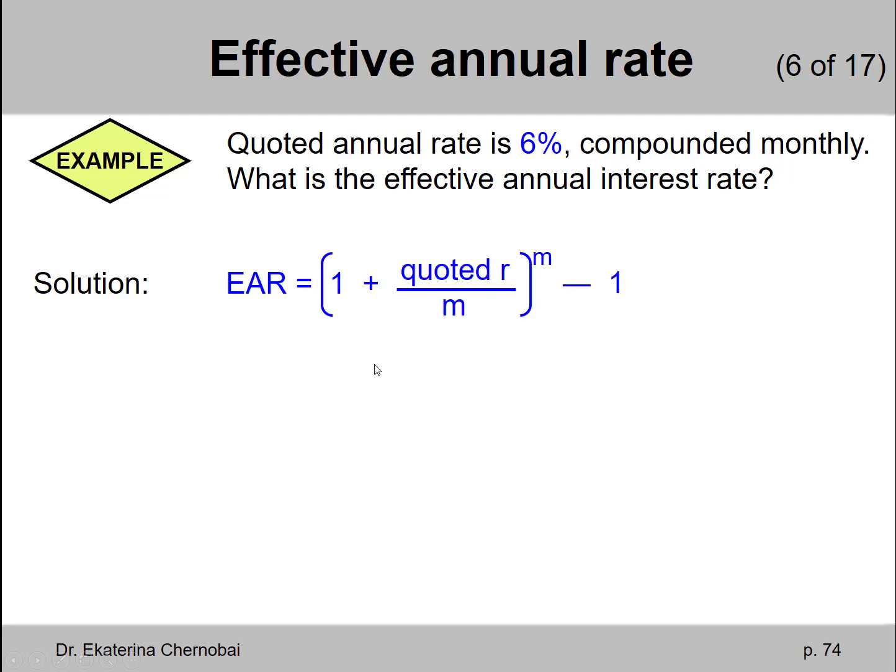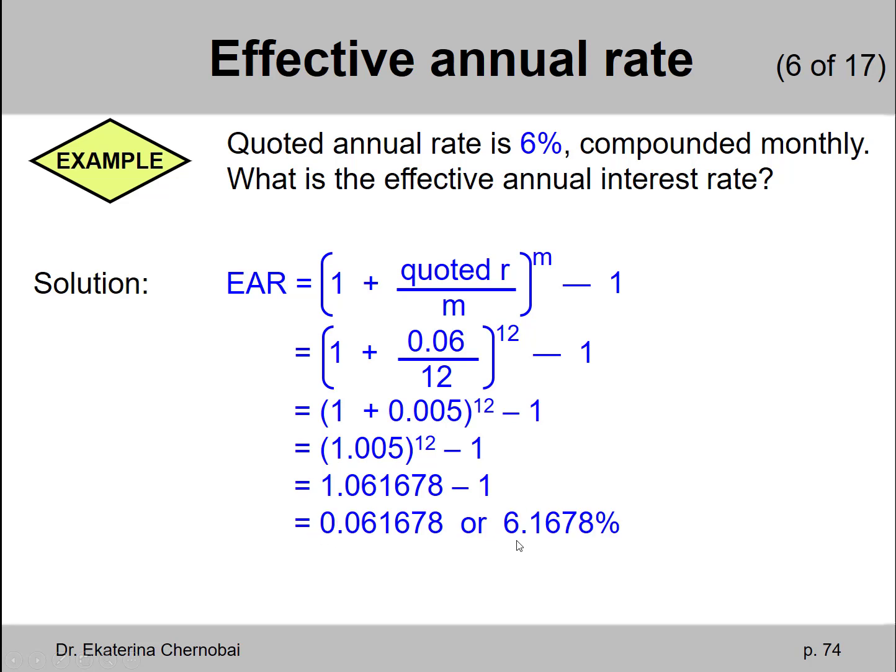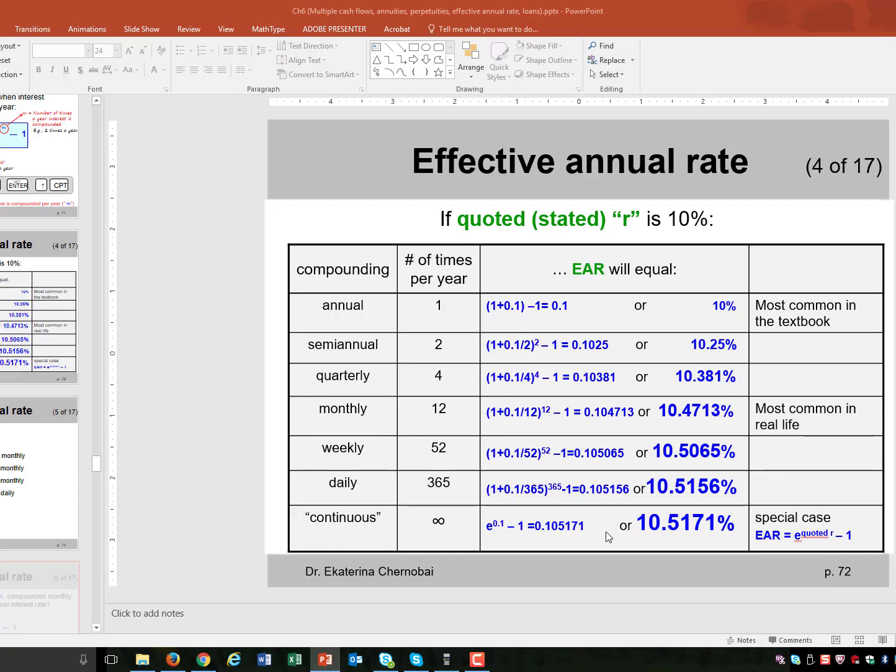If you use the formula, then the quoted rate would be 6% or 0.06 in decimals. M is 12 because monthly compounding means 12 times per year. And your answer will be 6.1678%.